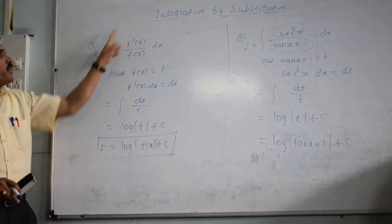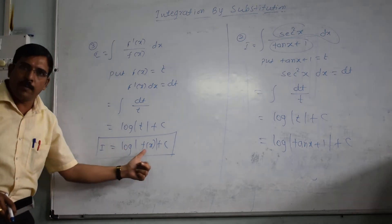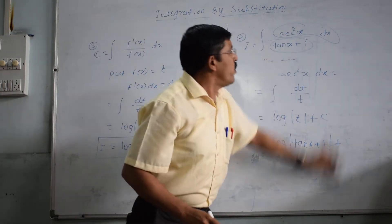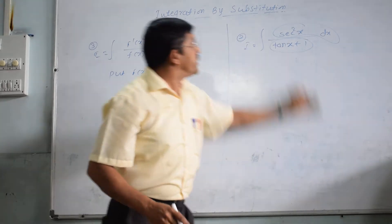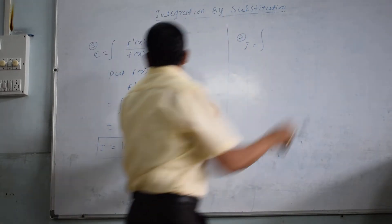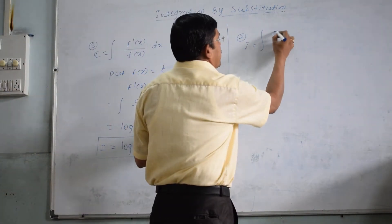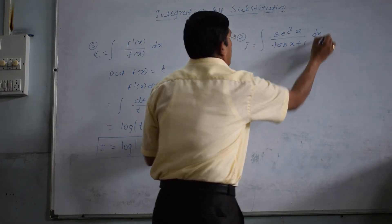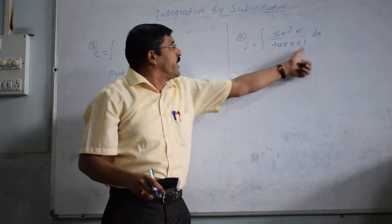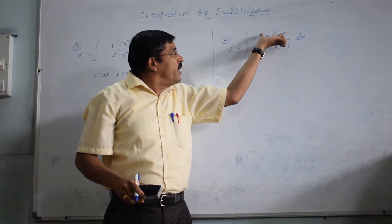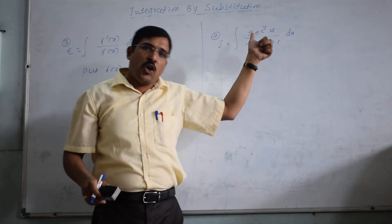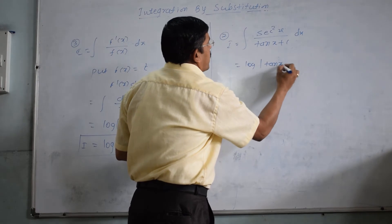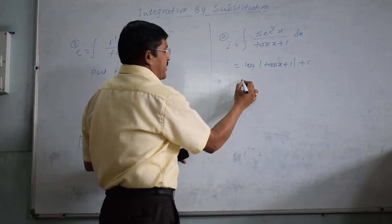It means if any question of this type appears, you can directly write the answer as log of f(x), if the derivative is present at the numerator. We can solve the same example now using this formula. Here, numerator is sec²x and denominator is tan x + 1. Since sec²x is the derivative of tan x + 1, derivative is at numerator and function at denominator. So by this formula, the answer is log|tan x + 1|.